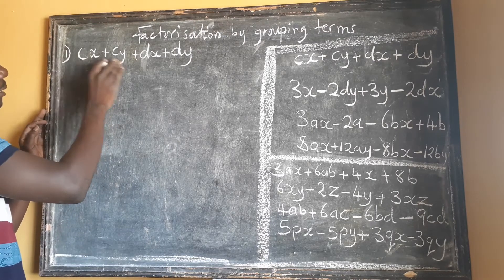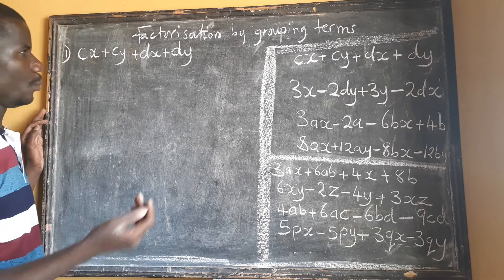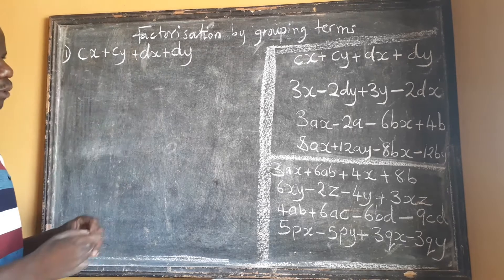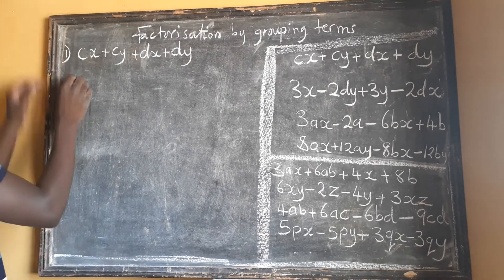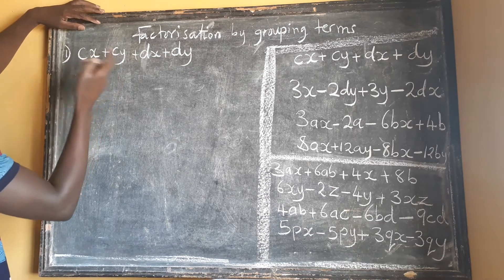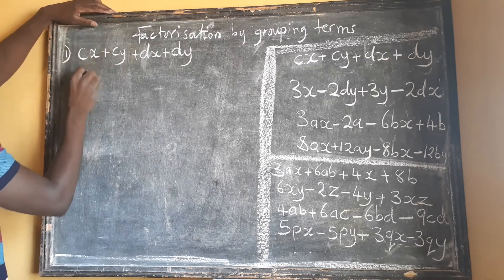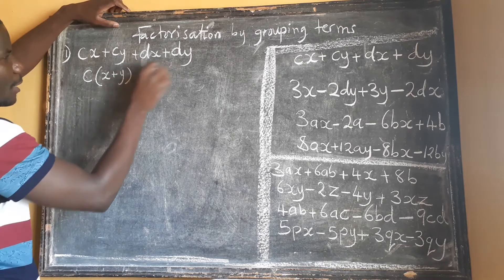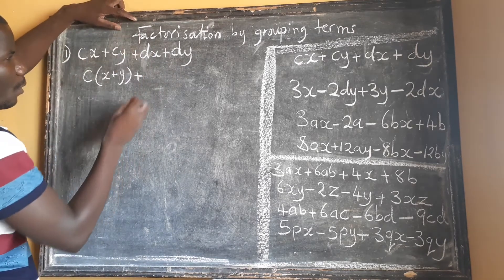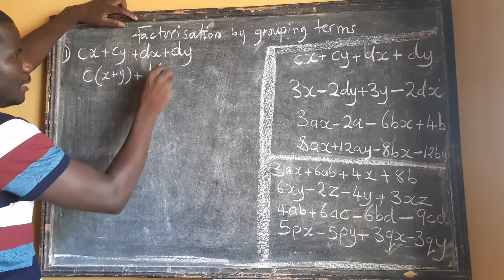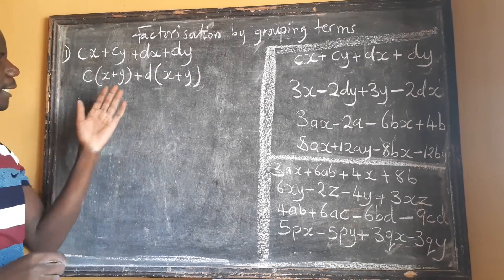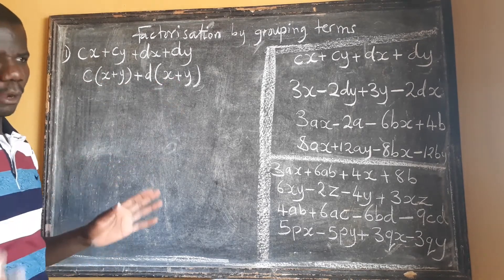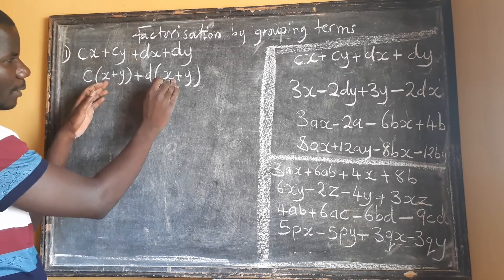We look at the first term and the second one — do we have a common factor? If we do, we can factorize. Looking at the first two terms, c is common, so we factorize to get c times (x + y). For the second pair, d is common, giving us d times (x + y). Now look at what we get in the brackets — both sides give us (x + y), which is a common factor. What we get on each side should always be the same.